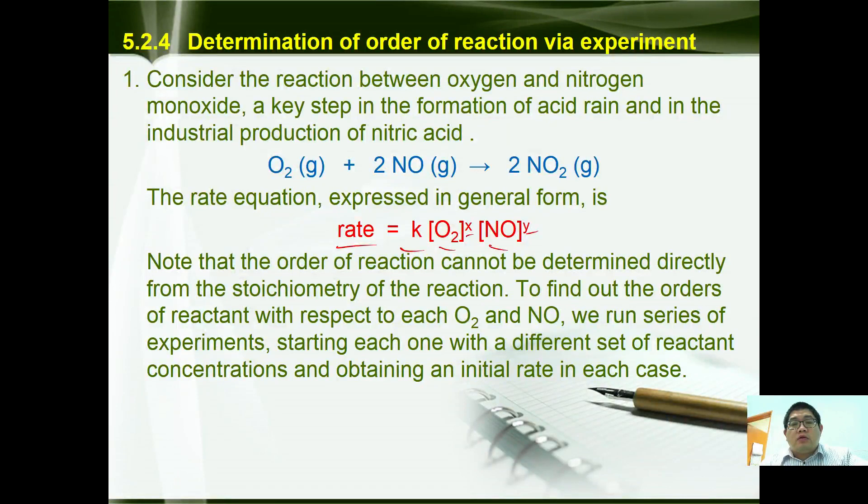Note that the order of reaction cannot be determined directly from the stoichiometry of the reaction. To find out the order of reactant with respect to each O₂ and NO, we run a series of experiments, starting each one with a different set of reactant concentrations and obtaining an initial rate in each case.